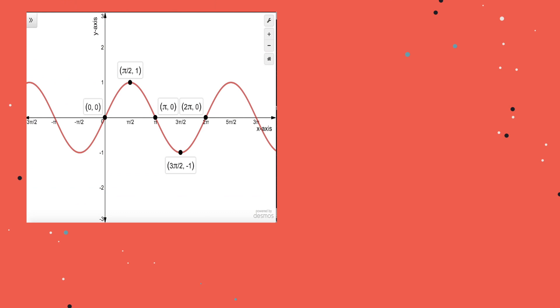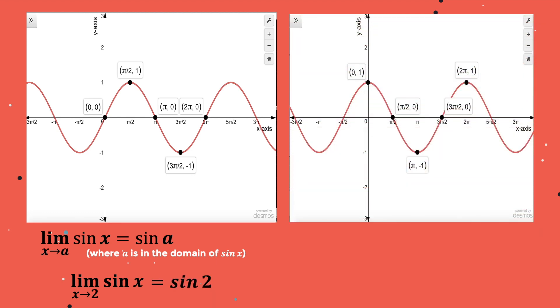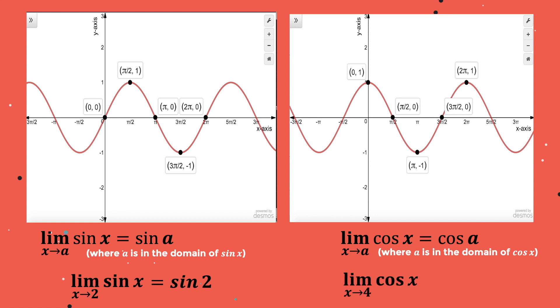Let's start with the limit of sine and cosine. The limit of sine x as x approaches a is equal to sine a, where a is in the domain of sine x. For example, the limit of sine x as x approaches 2 is equal to sine 2. The limit of cosine x as x approaches a is equal to cosine a, where a is in the domain of cosine x. For example, the limit of cosine x as x approaches 4 is equal to cosine 4.